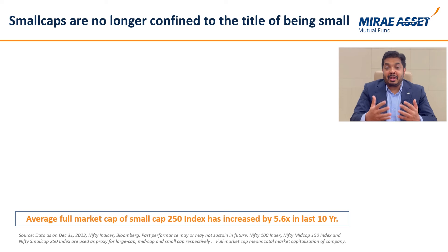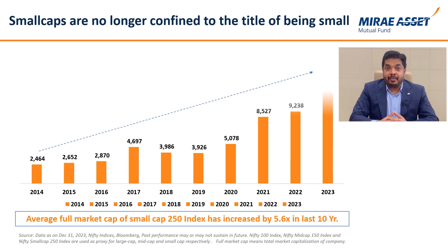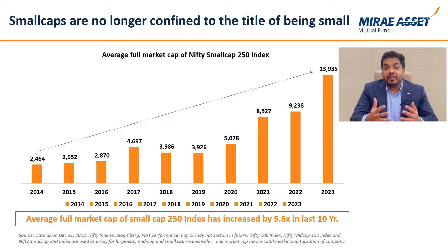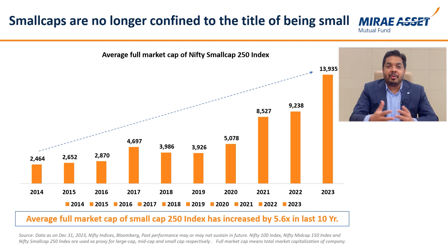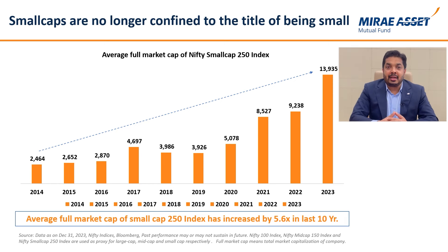We need to identify companies that can be multi-baggers, which means that we can generate good returns in the future. Second, we have wealth preservers, which means that our business is stable, earnings are stable, and overall portfolio performance is stable. And third, we avoid wealth destroyer companies whose performance at a fundamental level and stock level is poor.